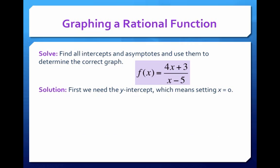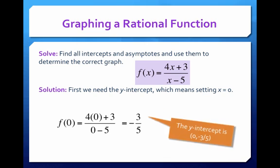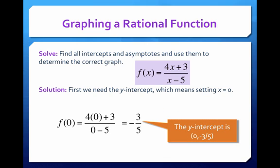And so how do we find a y-intercept? Well, that's fancy talk for just plugging in 0 for x. And so when we plug in 0 for x, we get negative 3 fifths. So we're going to keep that number in the back of our mind or on our paper so we know that we're crossing the y-axis at negative 3 fifths. So we have our y-intercept point here.